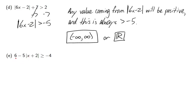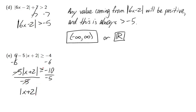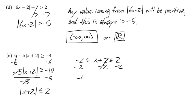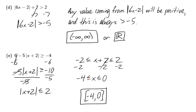One more example: the absolute value is not by itself, so subtract 6 from both sides, then divide by negative 5. Since we're dividing by a negative number, we flip the sign. Now we're in standard form with the absolute value by itself. Applying the less than or equal to rule: negative 2 ≤ (x + 2) ≤ 2. Subtracting 2 from all three sides gives negative 4 ≤ x ≤ 0. The solution in interval notation is [−4, 0] with brackets because of the less than or equal to symbols.